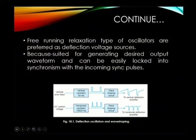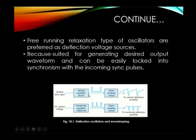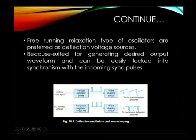This can be studied with the help of the deflection oscillator and wave shaping circuit diagram. The vertical sync input is given to the oscillator, which will have a frequency of 50 Hz. The output from the oscillator is given to the wave shaping circuit, which eliminates unwanted signals and sends the output to the amplifier for the next process. Similarly, the same DC control voltage is sent to the horizontal oscillator, which has a frequency of 15,625 Hz. The output from that oscillator is again sent to the wave shaping circuit, and we get the horizontal deflection output sent to the amplifier.